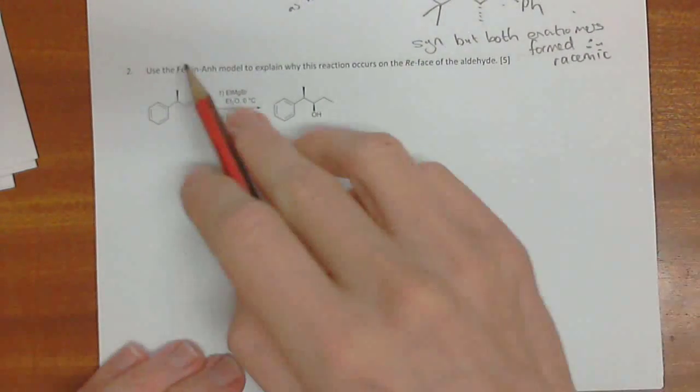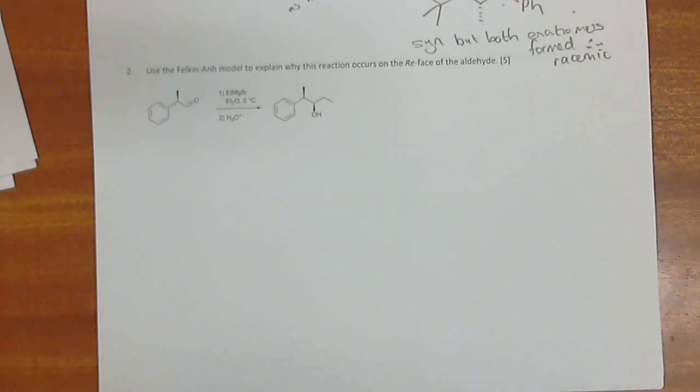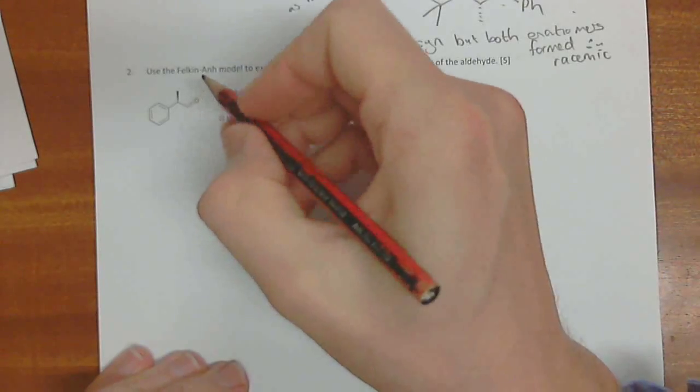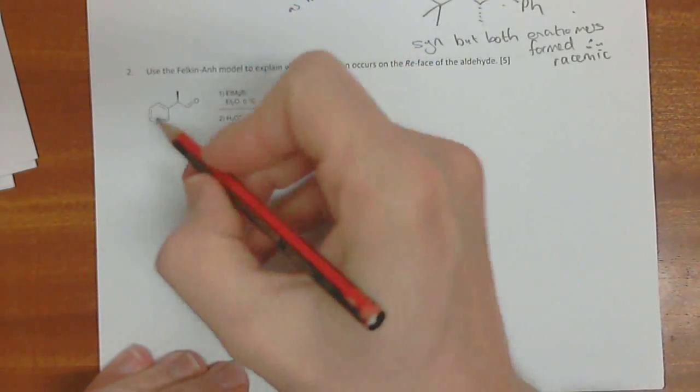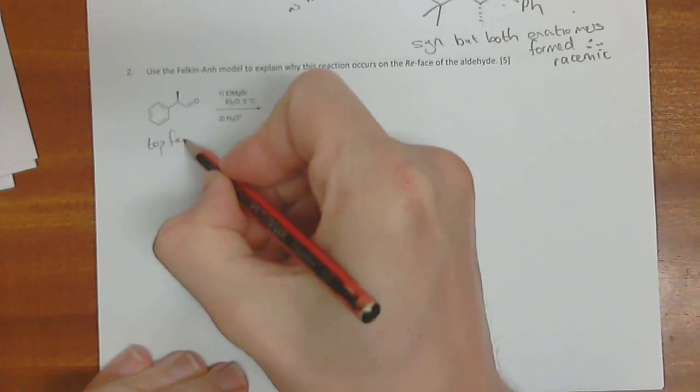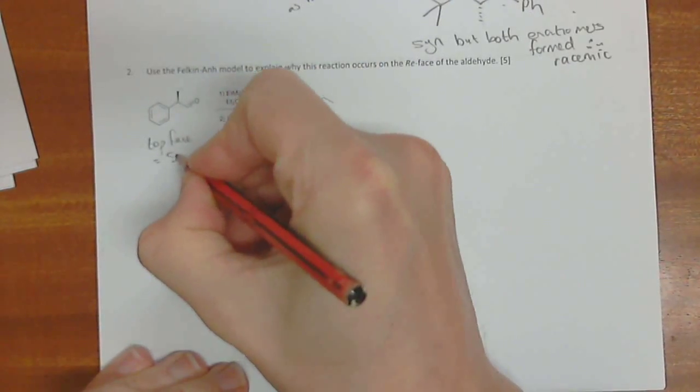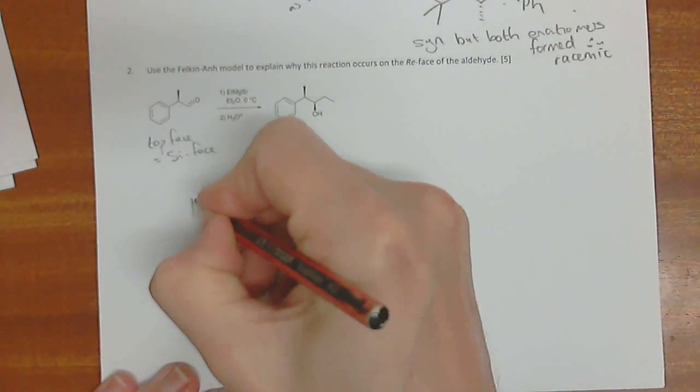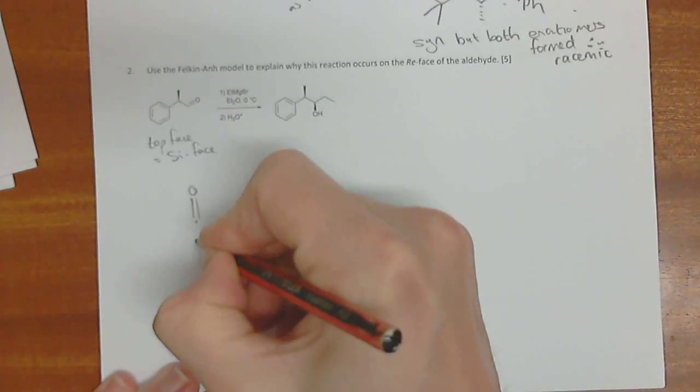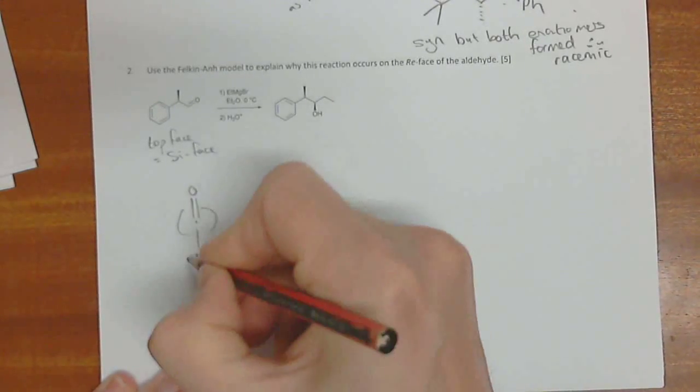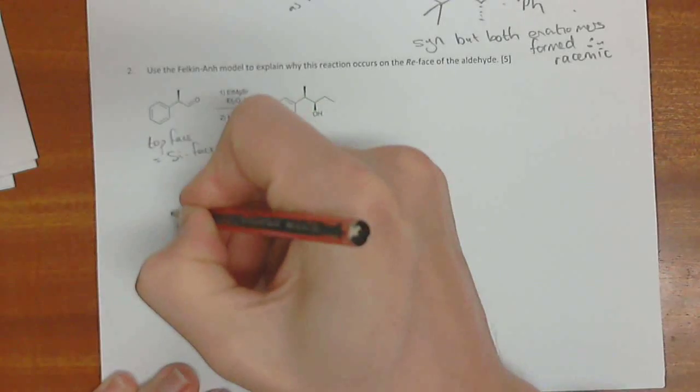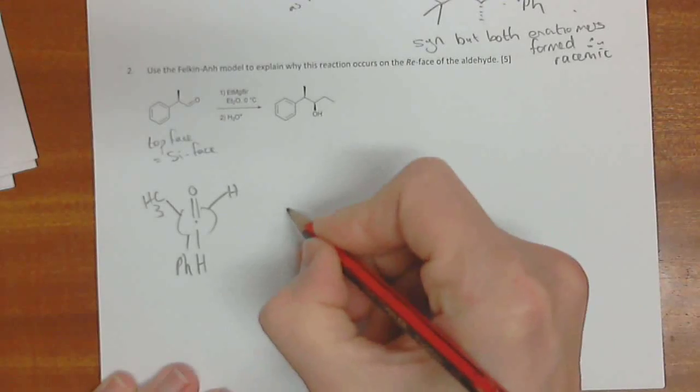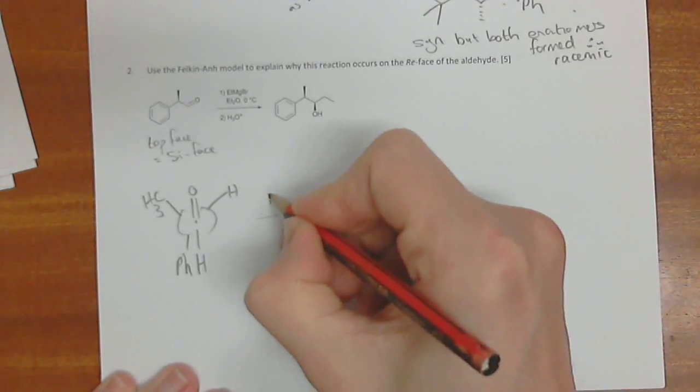This one was the Felkin-Anh. You're actually told that it's the Felkin-Anh model. So, of course, you don't have to write that down. You're told that it's from the re-face. So if we look at this one over here, we see that of this molecule over here, the top face equals the si face. So it must be coming in from below. But we draw out our Newman projection.